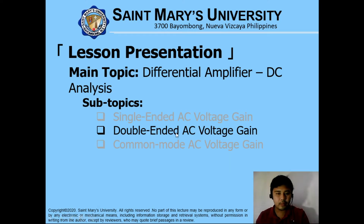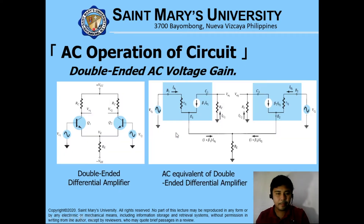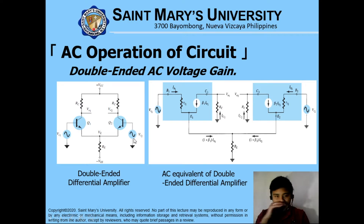For double-ended AC voltage gain, the same concept applies. However, as you can notice in the following figure, we have two inputs on the transistors. That is the characteristic of double-ended AC voltage gain. As you can remember, the single-ended differential amplifier has one of its inputs grounded. In this one, both of the inputs have an input signal.